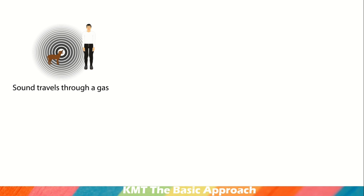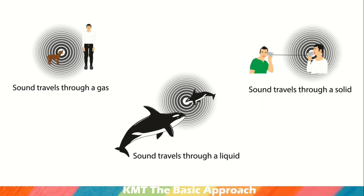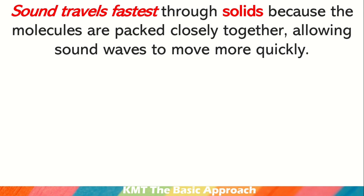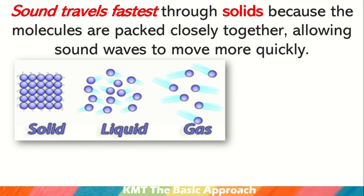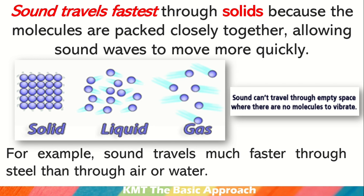Sound travels through a gas. Sound travels through a liquid. And sound travels through a solid. Sound travels fastest through solids because the molecules are packed closely together, allowing sound waves to move more quickly. Sound cannot travel through empty space where there are no molecules to vibrate. For example, sound travels much faster through steel than through air or water.